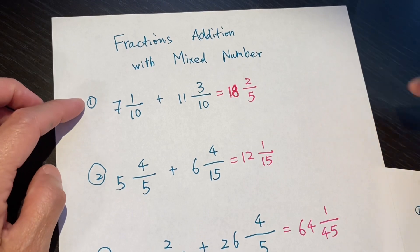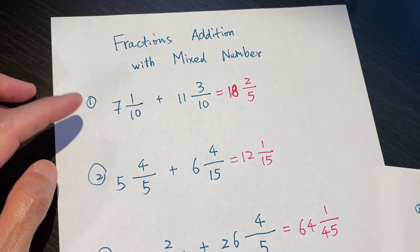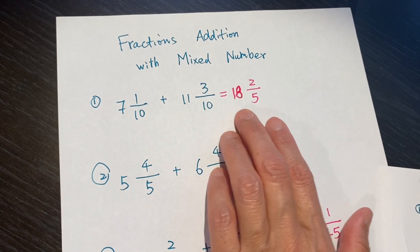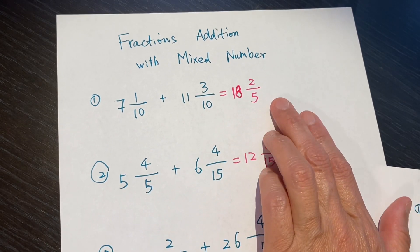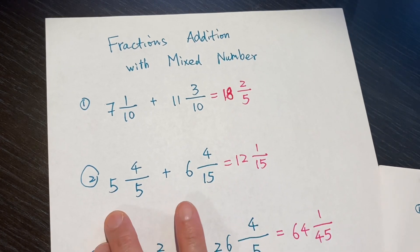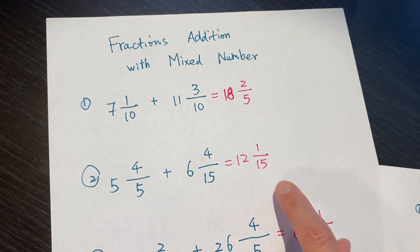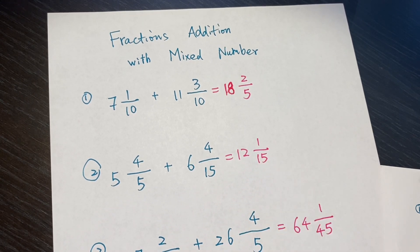Okay, hello dear friends. Now, let's see the answer. The first one, 18 and 2 over 5. The second one, 12 and 1 over 15.